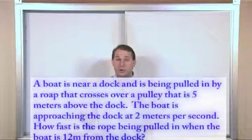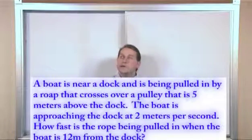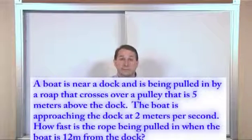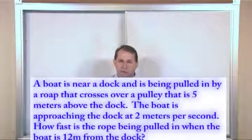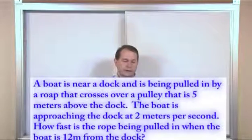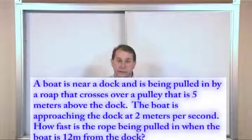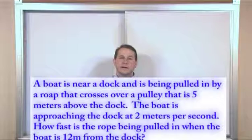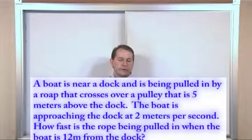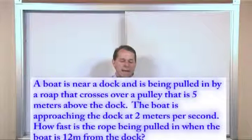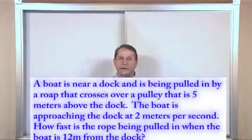This problem says we have a boat coming into a dock. Above the land on the dock is a pulley system, and this pulley has a string that goes over it and ties to the boat that's in the water. We're pulling on this rope, which is pulling the boat into the dock. The pulley is five meters above the ground on the dock and the boat is 12 meters out. The boat is coming toward the dock at a rate of two meters per second. How fast is the rope being pulled in when the boat is 12 meters from the dock?